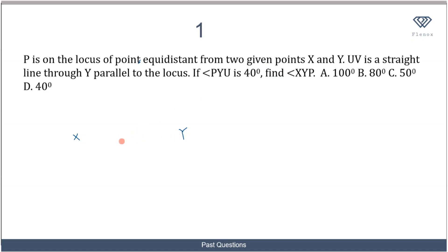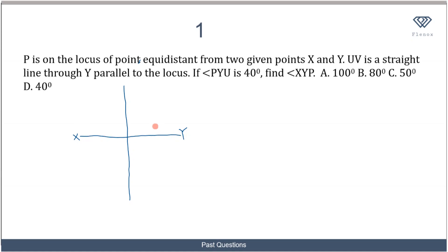The locus of points equidistant from X and Y is a line perpendicular to XY — that is, the perpendicular bisector of XY. We're told that P lies on this locus, so P can be any point along that perpendicular bisector.